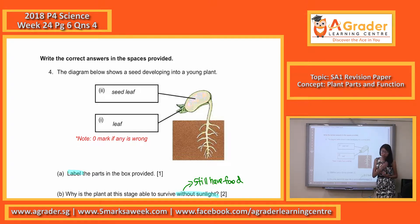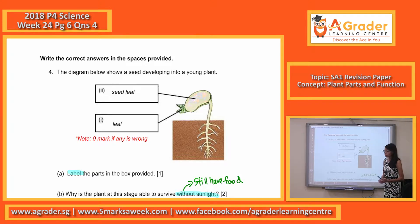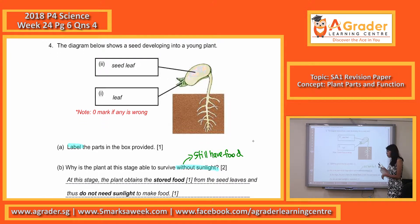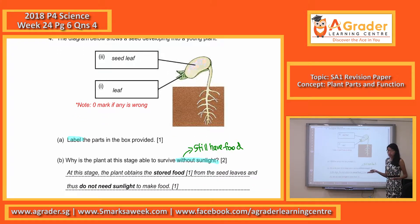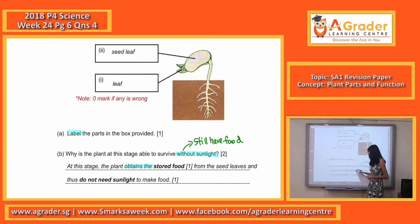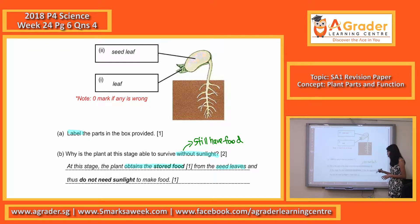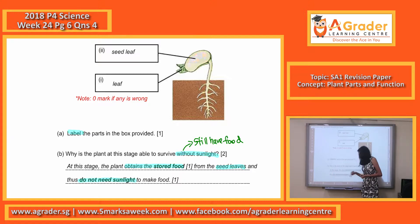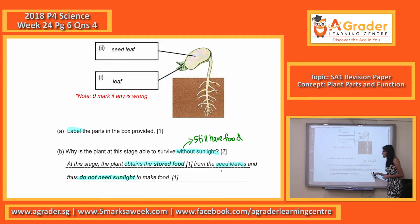Only the true leaf makes food. Mention that the seed leaf has stored food to provide for the young plant. They do not need sunlight to make food. Please mention that the plant obtains stored food from the seed leaf, so they do not need sunlight at the moment to make any food at all.